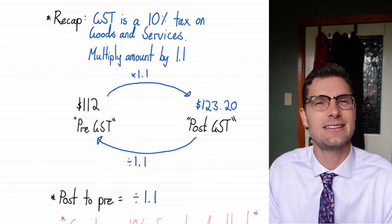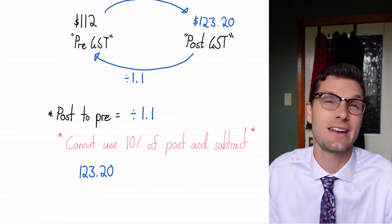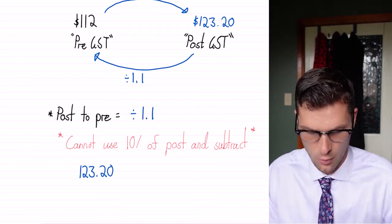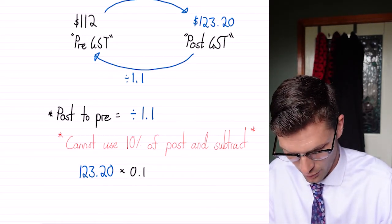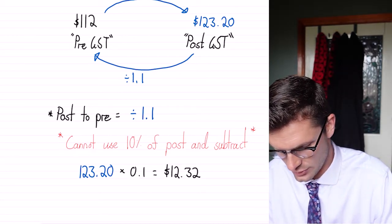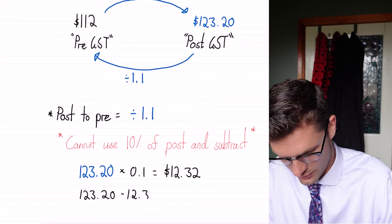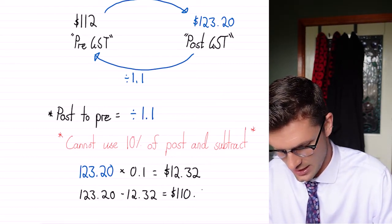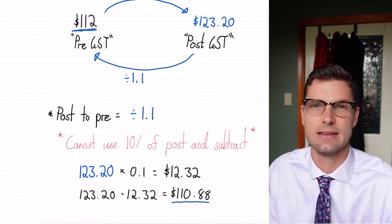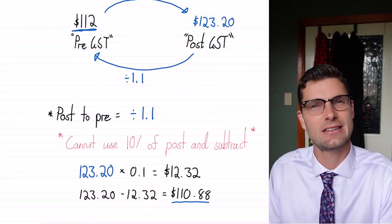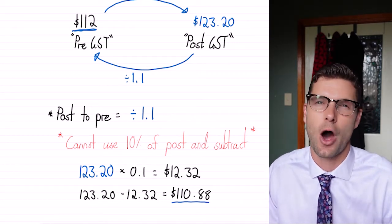What's really important is even though the tax is only 10%, you cannot use 10% of the post-GST price and subtract it — this is gonna give you the wrong number. For that example, we had $123.20 as the post-GST price. If I found 10% of this, so multiplied by 0.1, that would be equal to $12.32. If I minus this off my total price, so $123.20 minus $12.32, I'd be left with $110.88. That is clearly not the same as the pre-GST price I started with. So you've gotta be really careful — just because it's a 10% tax doesn't mean you can take the final price and minus off 10%. You've gotta do that divide by 1.1.